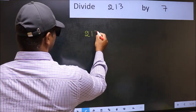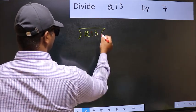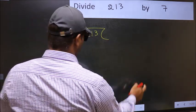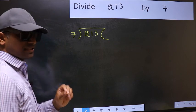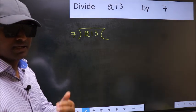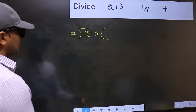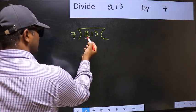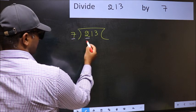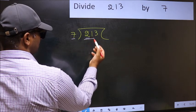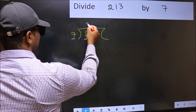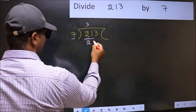213 and 7 here. This is your step 1. Next, here we have 2 and here 7. 2 is smaller than 7, so we should take 2 numbers: 21. When do we get 21 in 7 table? 7 times 3 is 21.